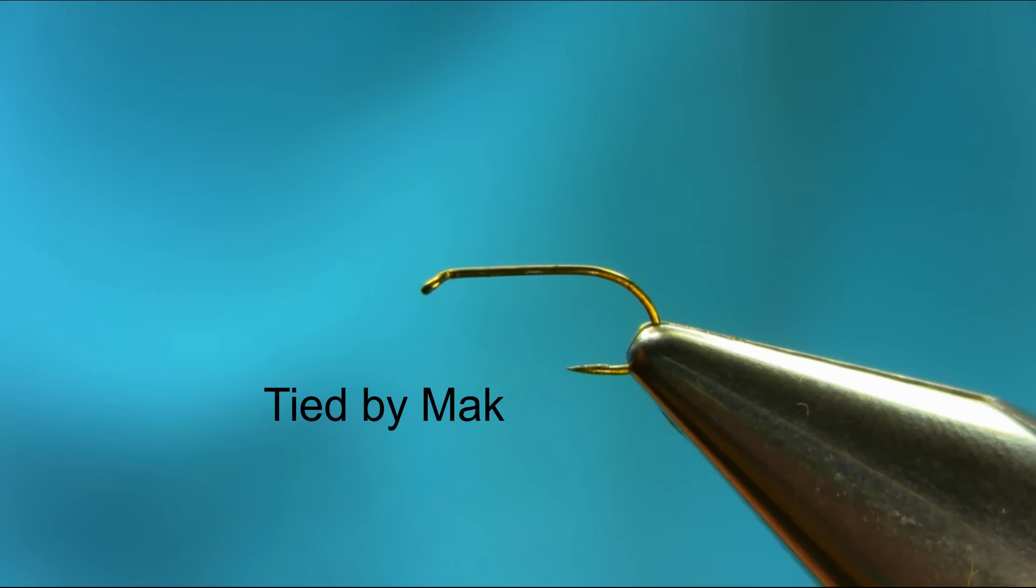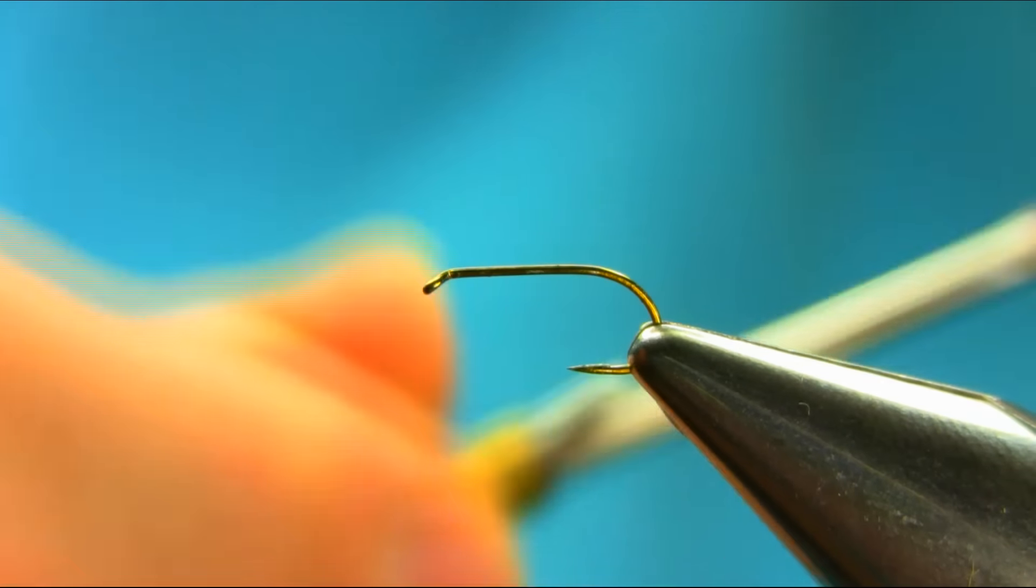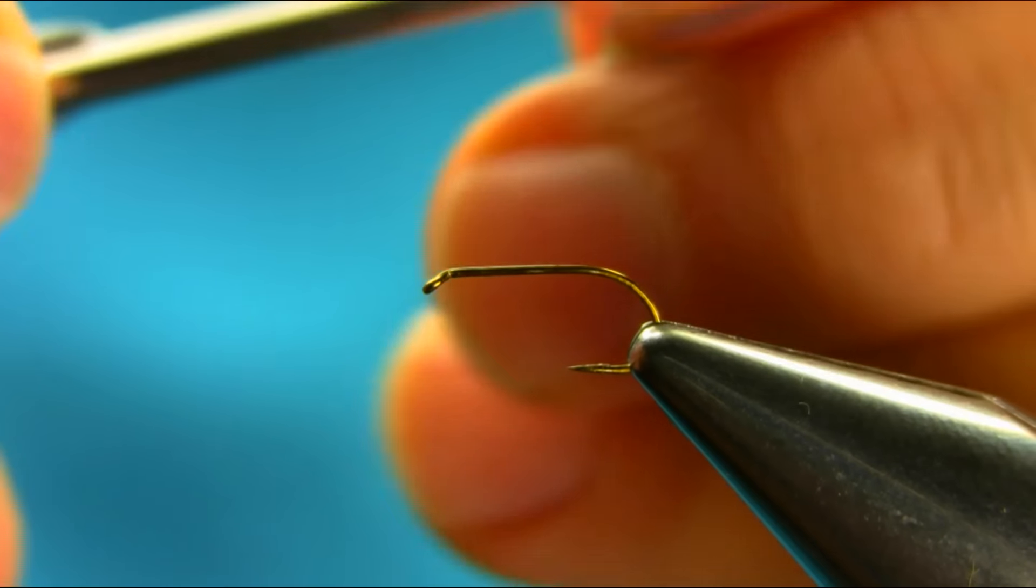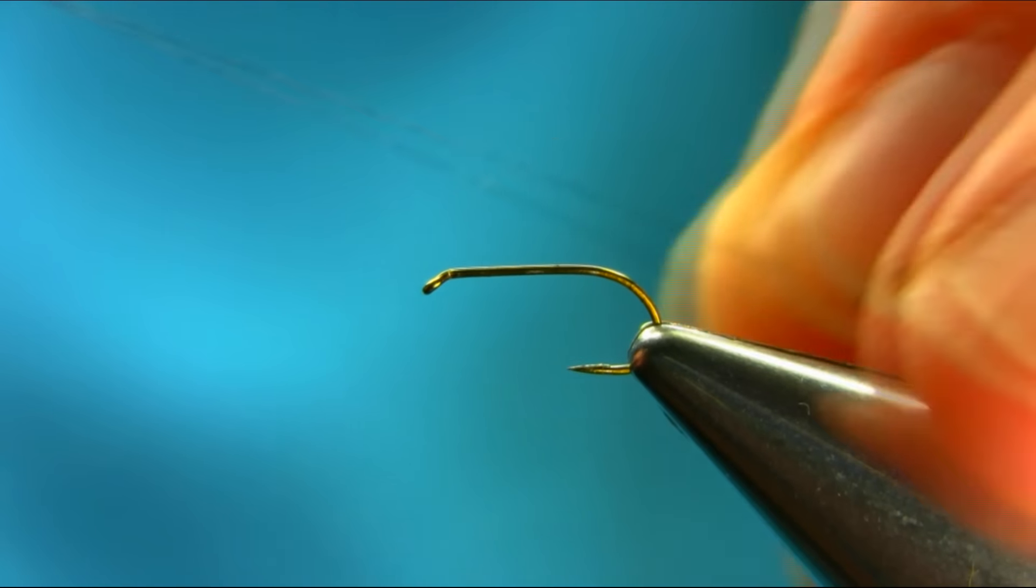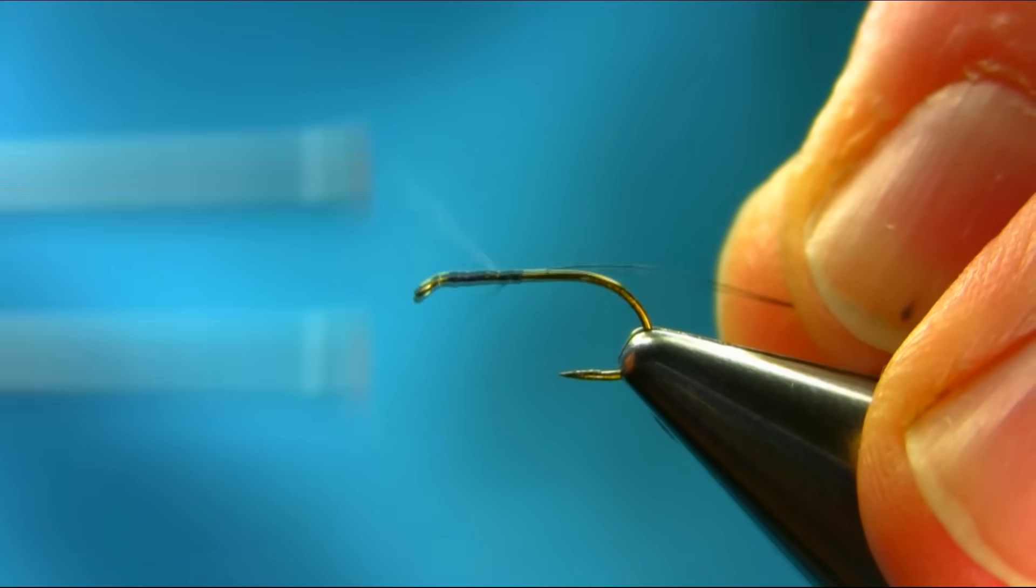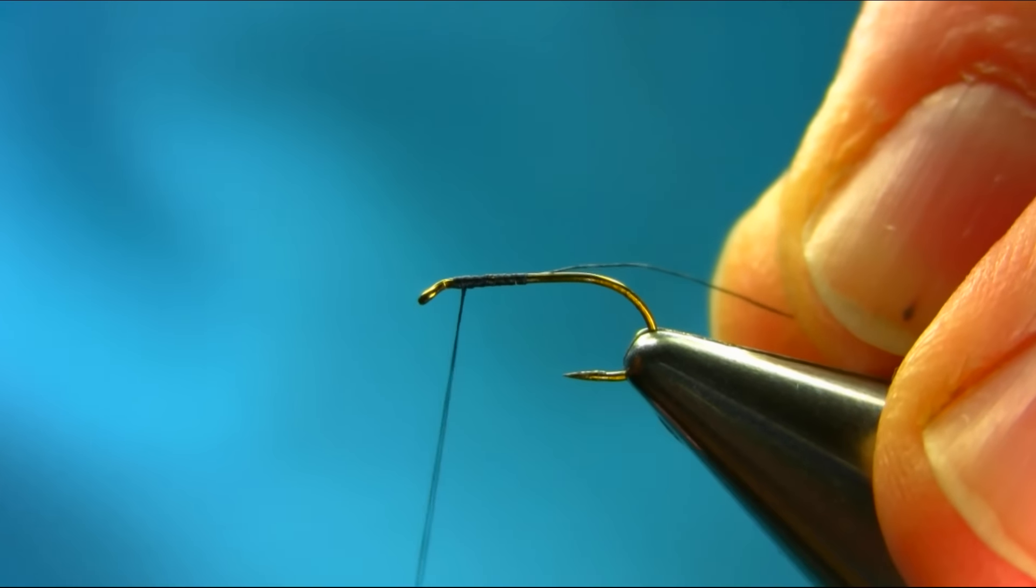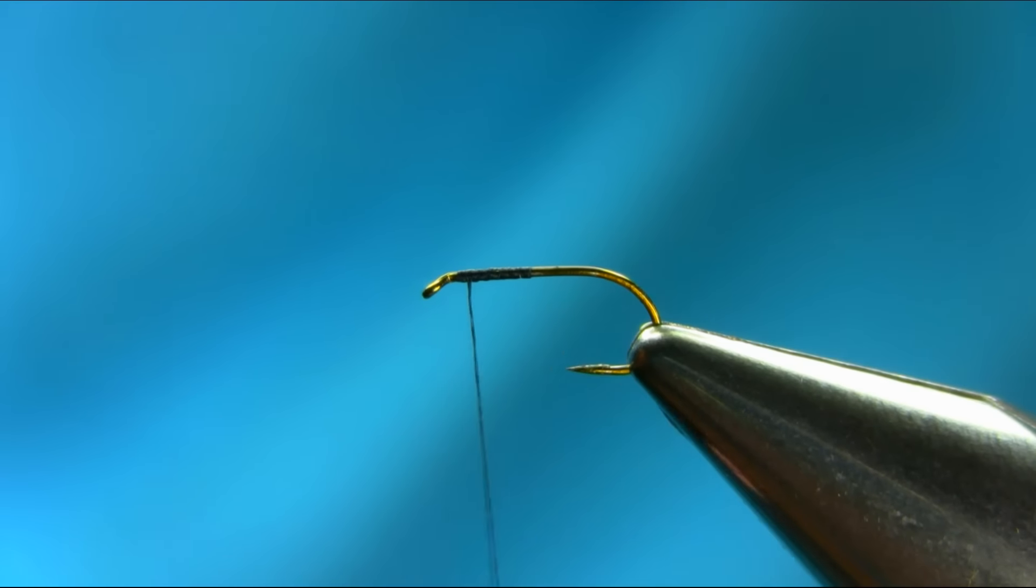Hi, this is size 14 light wire hook and thread I'm using is block A2 wax thread. Start below the eye and then come back. This is a different way of tying because that way you're gonna skew all the fibers.